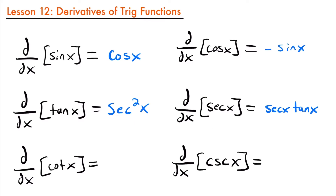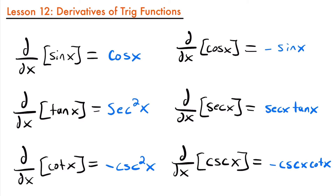The derivative of cotangent is negative cosecant squared x, and the derivative of cosecant is negative cosecant x times cotangent x. These two also form a pairing — cosecant and cotangent work together, just like secant and tangent. When learning these, try to learn them in pairings: sine and cosine, then tangent and secant, then cotangent and cosecant.